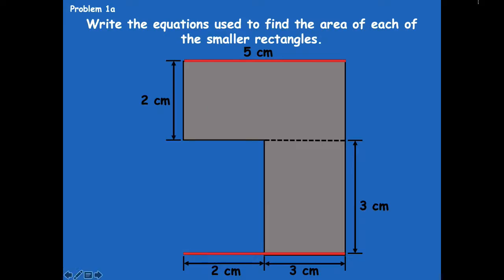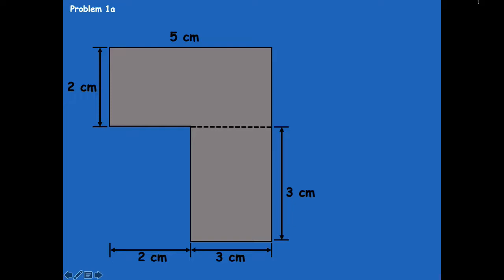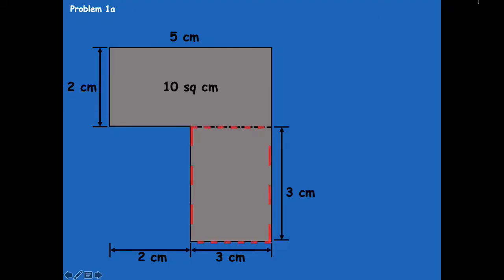If you need more time, make sure you pause. So I'm going to shift mine over a little bit so I have some space to work. I'm going to find this area first — we know that it would be two times five, because those are my side lengths, and two times five equals ten. Then I'm going to come and measure this other rectangle, which we know my side lengths are three and three, so three times three equals nine. So there I have nine square centimeters.